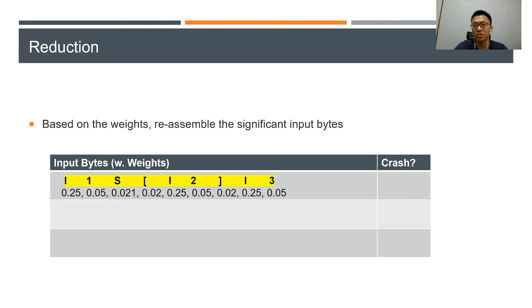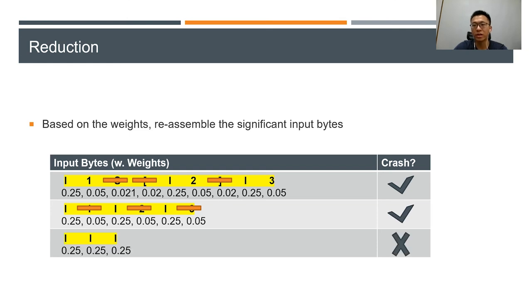In this round, we remove half of the less significant bytes and check whether it would lead to a crash. If so, continue to remove half of less significant bytes and check if it would crash. When it does not crash, we do another round of reduction with this reduced input.